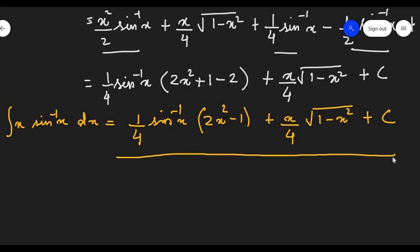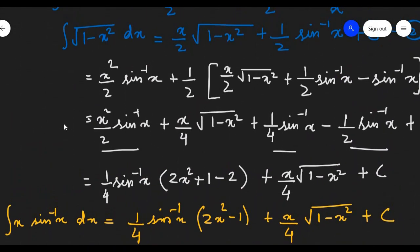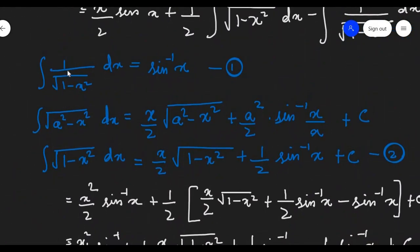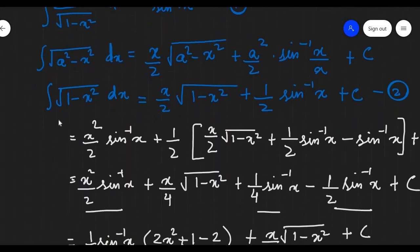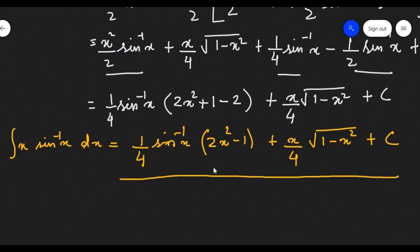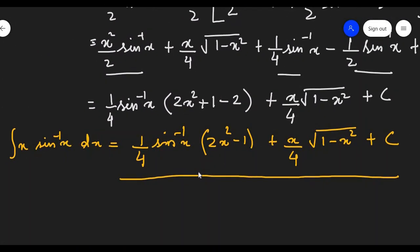I hope you understood how we solved this. We made use of two very important identities: the integration of 1 over square root of 1 minus x squared, which equals sine inverse x, and the integration of the form square root of a squared minus x squared, given by x by 2 times square root of a squared minus x squared plus a squared by 2 times sine inverse x by a. Putting everything into the formula gives us the final answer. Keep practicing — let us meet in the next video.